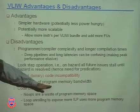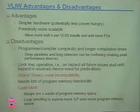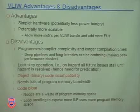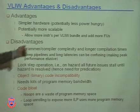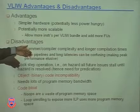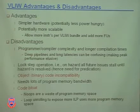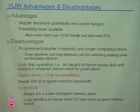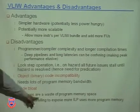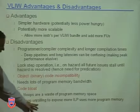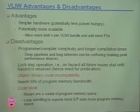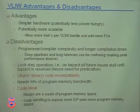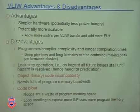Another disadvantage: VLIW needs lots of program memory bandwidth because you're fetching large quantities of instruction memory at once - 144 bits or 128 bits at once is a lot of fetching. Code also gets bigger - called code bloat. A lot of it is no-ops. No-ops waste program memory space, and loop unrolling to expose more ILP uses more program memory because it makes the program bigger. The parallelism, the extra no-ops, and loop unrolling all make the instruction stream much larger.